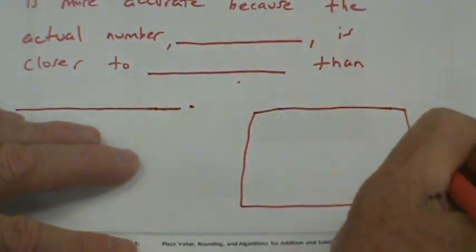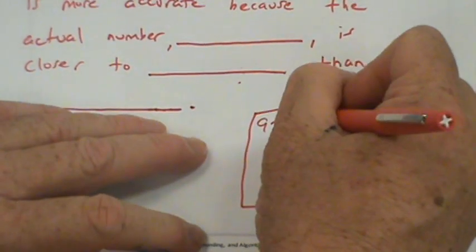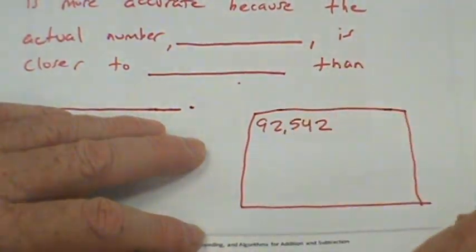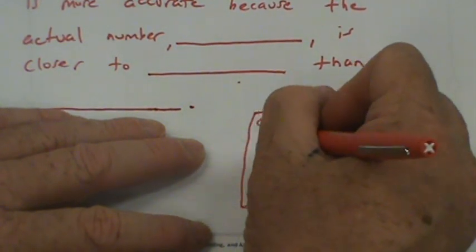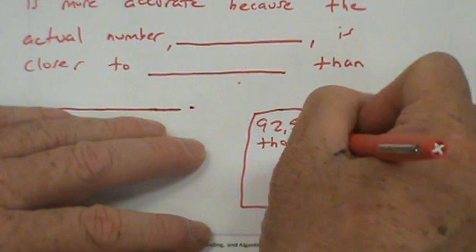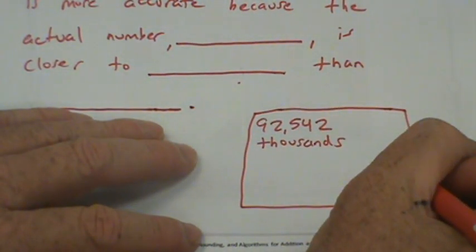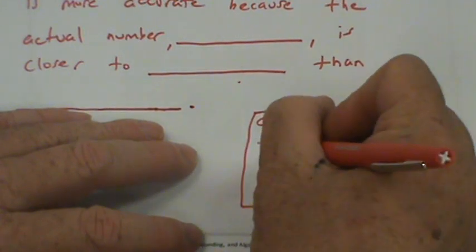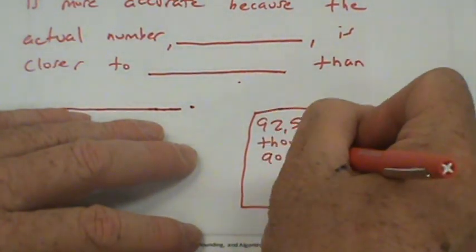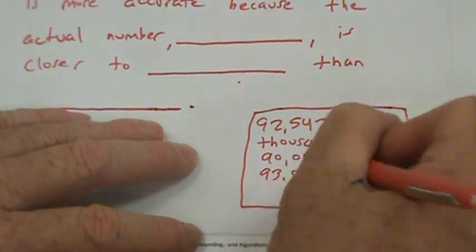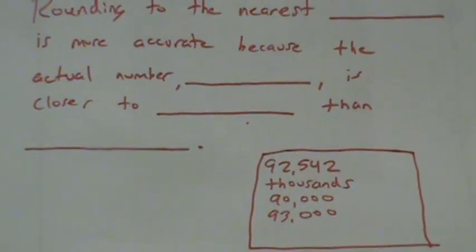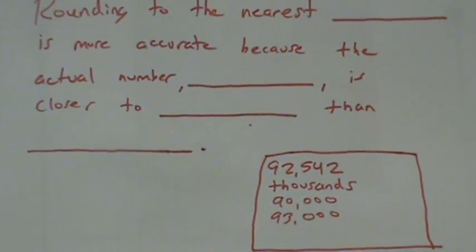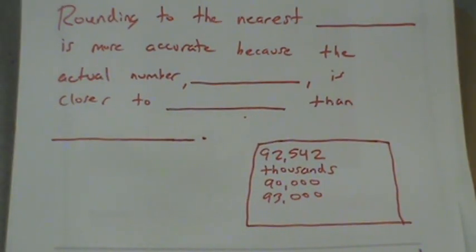Now we're going to do a word box to fill these in. Here's what you're going to use to fill in. 92,542. Thousands. 90,000 and 93,000. So we'll leave that up there for a little bit. We'll zoom out a bit. So you can always pause this.